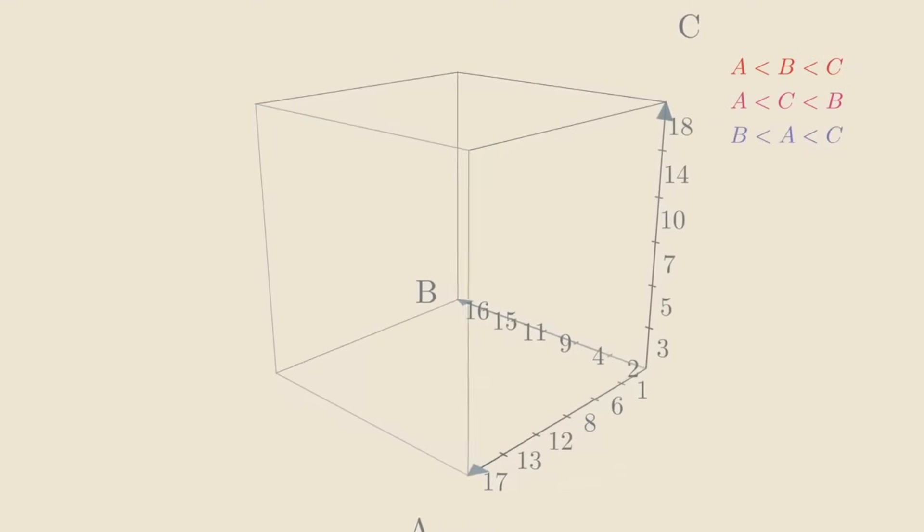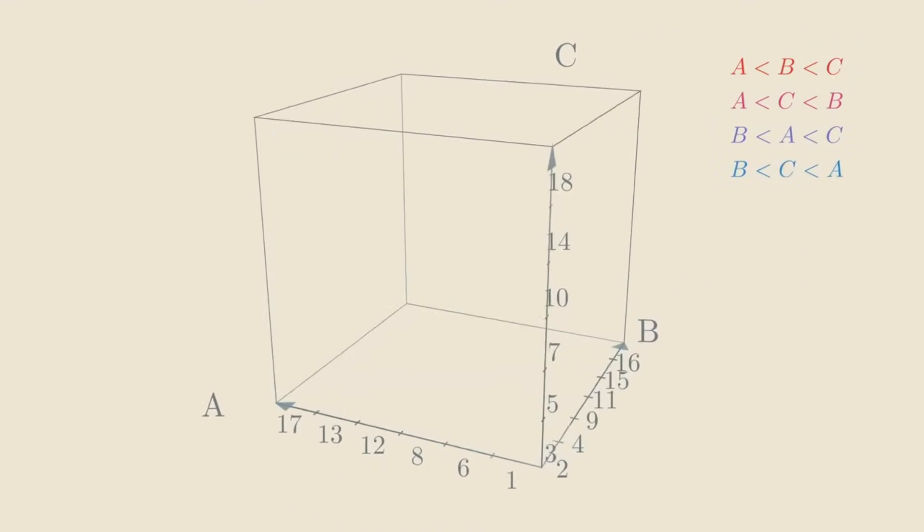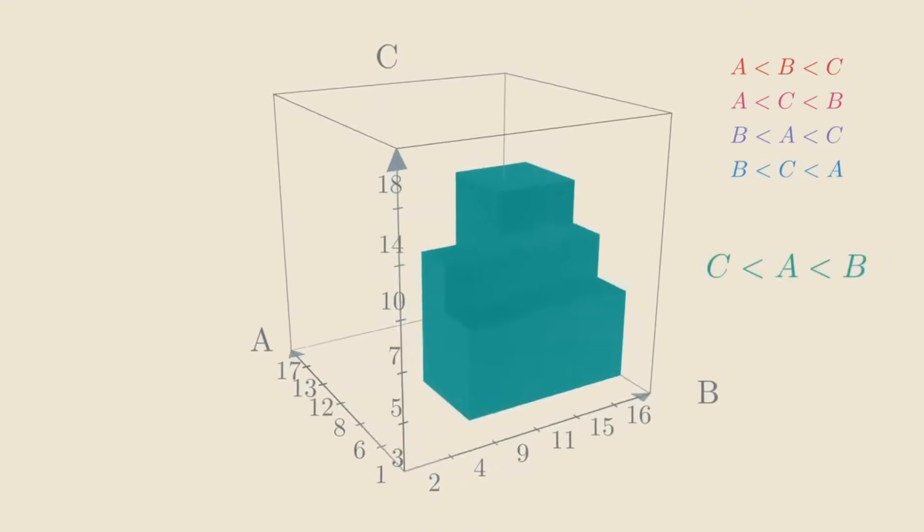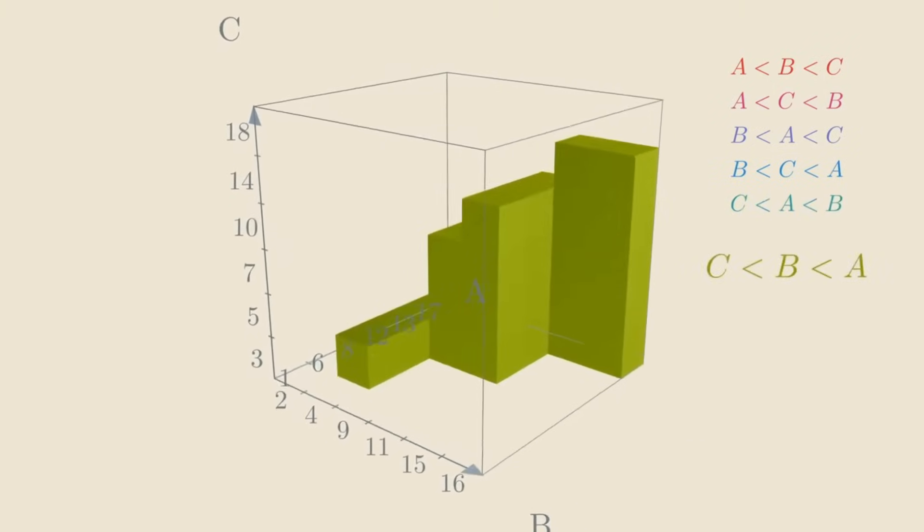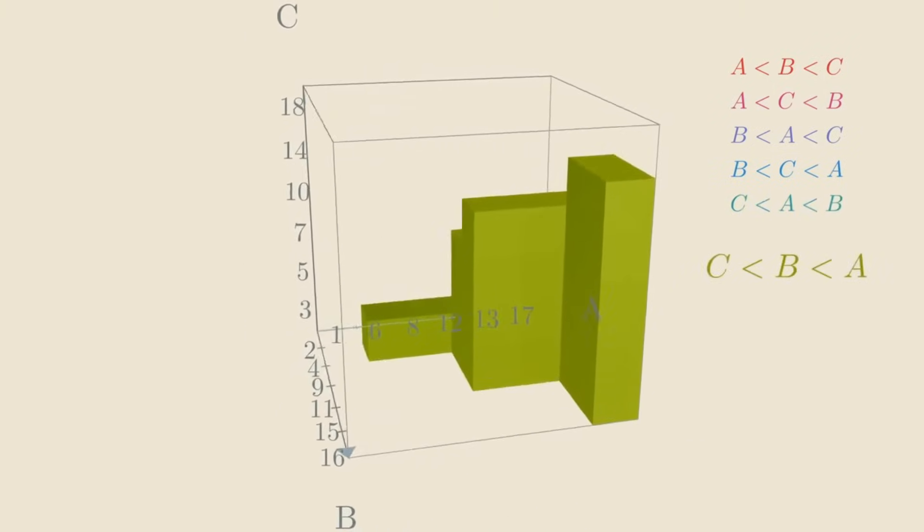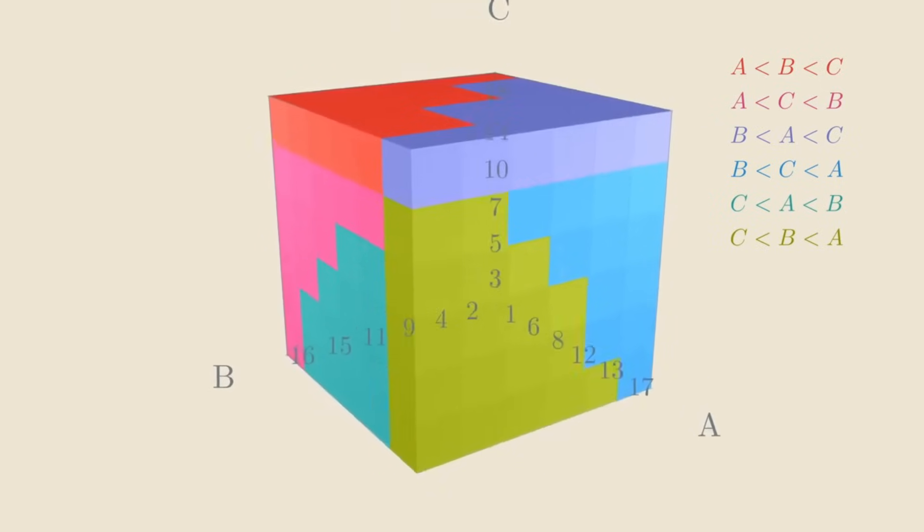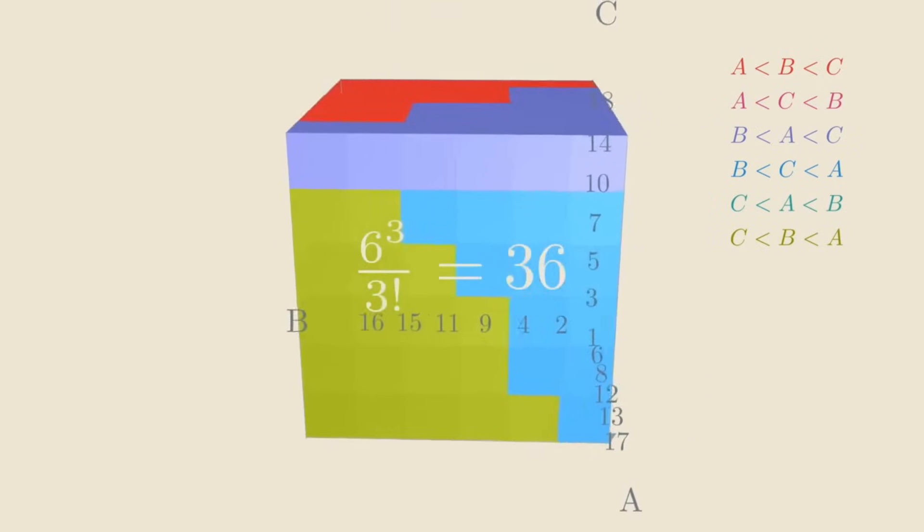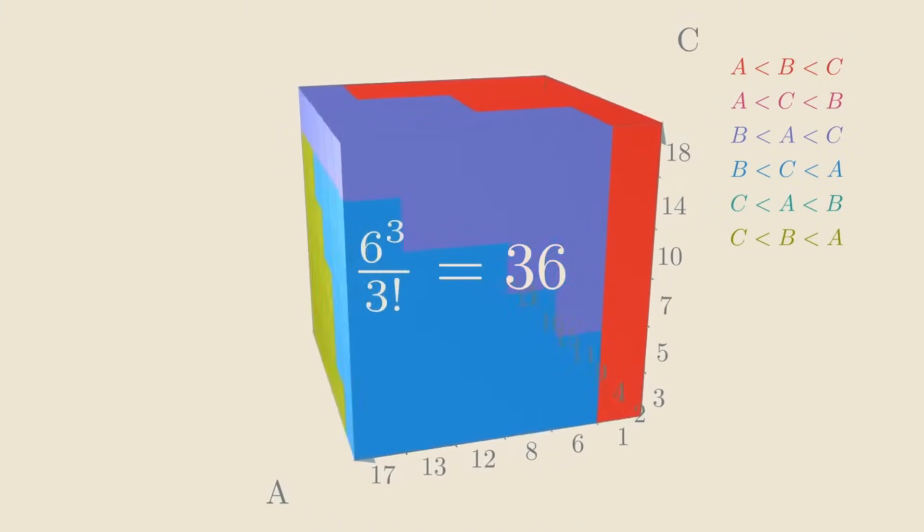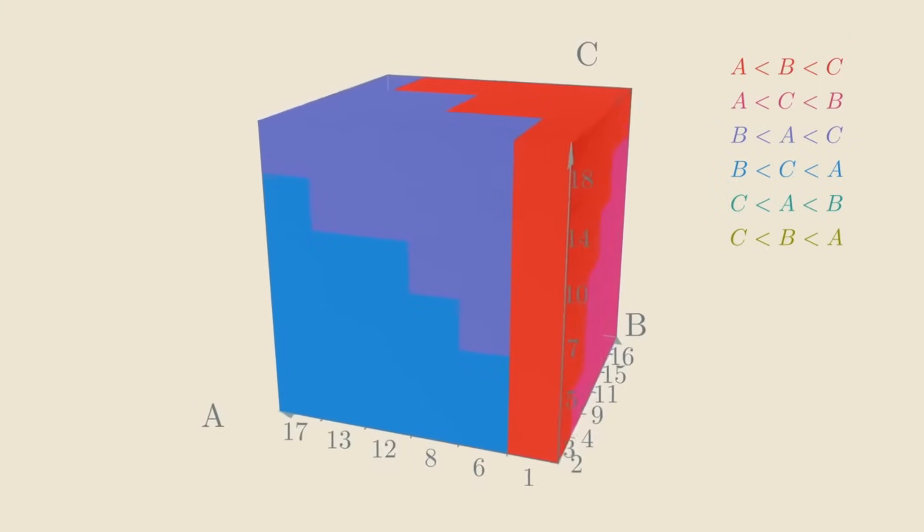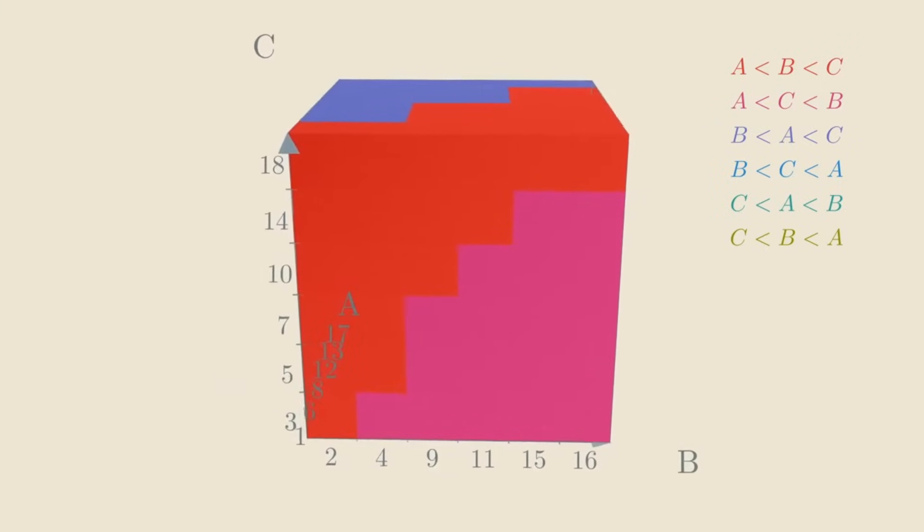Now, there are already 3 factorial, or 6, possible orderings of the three players. We want to write different numbers on the dice so that among all 6 cubed possible outcomes, all 6 orderings of the three players appear the same number of times, meaning they are all equally likely. In other words, we want each ordering to occur 36 times. We will call dice satisfying this condition fair. I hope you can see how we can generalize this notion to more than three players as well.